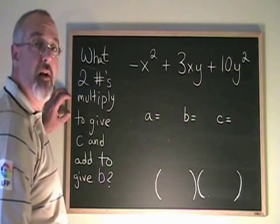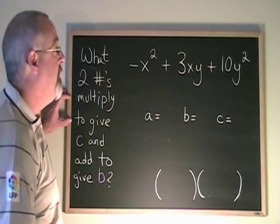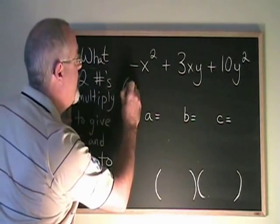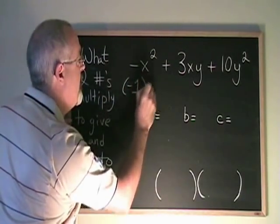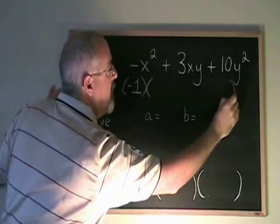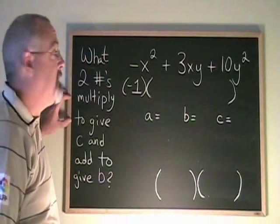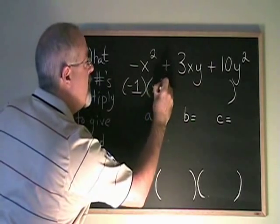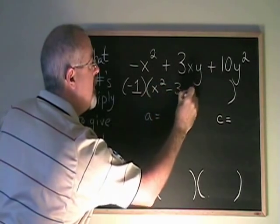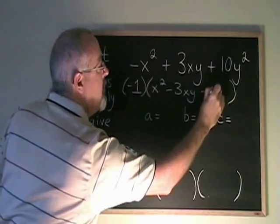The first thing that I have to do, though, is take out a common factor of negative 1. If I factor a negative 1 out of this expression, I get x² - 3xy - 10y².